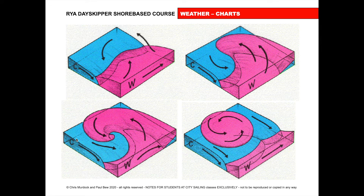Right towards the end, the warm air is forced right up and it's sitting above the cold air. And as we said before, where warm air and cold air meet, we get rain. So we've got rain over this line, rain over this line, rain here where the cold air and the warm air is meeting, and we'll get rain as the warm air cools down, condensation happens, clouds form, and it rains.